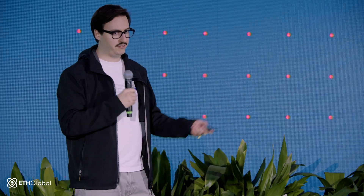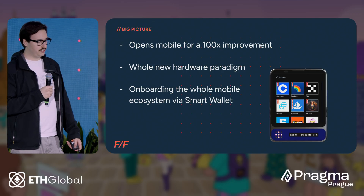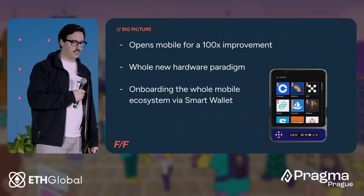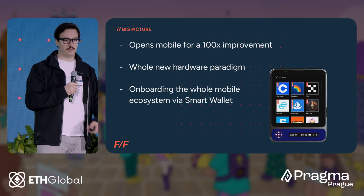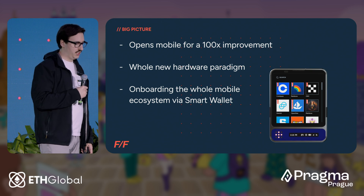So what's the big picture here? We want to open up 100x improvements for crypto on mobile. In our best case, all of our software is open source, so ideally Android takes this code from us and suddenly everybody with an Android device has an account abstracted wallet without having to think about it. The DGEN1 is a whole new hardware paradigm — it's the first hardware wallet that uses account abstraction completely at the lowest level, and we're basically onboarding the entire mobile ecosystem to a smart wallet.